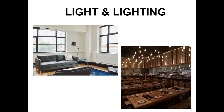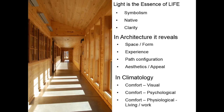Welcome back to climate responsive architecture videos. We are going to see about unit number four, part one, which is called light and lighting. In this chapter we are going to see about daylighting and artificial lighting, the effects of daylighting, the technical aspects of daylighting, etc. Light is the essence of life — it gives you symbolism, clarity in architecture, reveals about the space and form, gives you an experience, shows you the path and its configuration, and also gives you aesthetics and appeal. In climatology, it gives you visual comfort, psychological comfort, and physiological wellbeing.